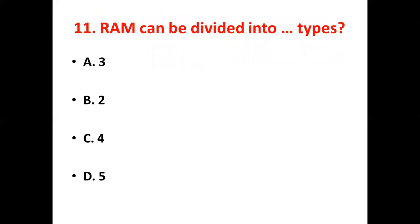11th bit: RAM can be divided into dash types. Option A, 3. Option B, 2. Option C, 4. Option D, 5. The answer is Option B, 2.